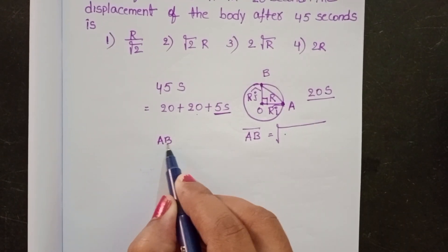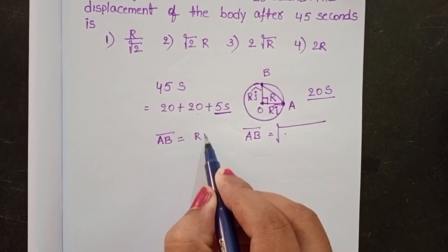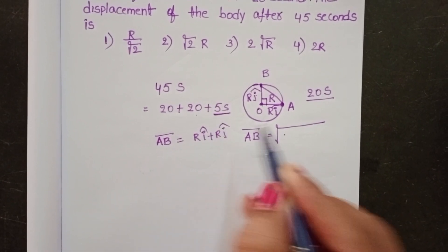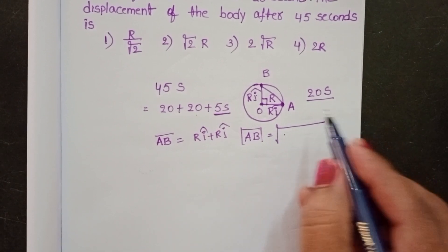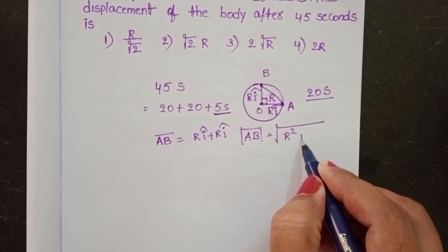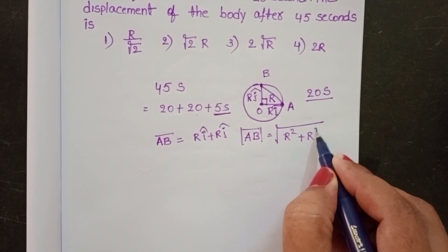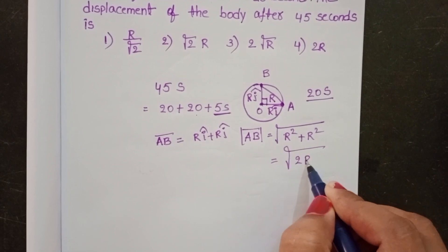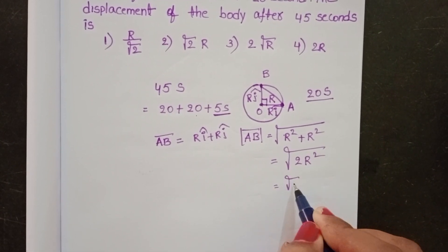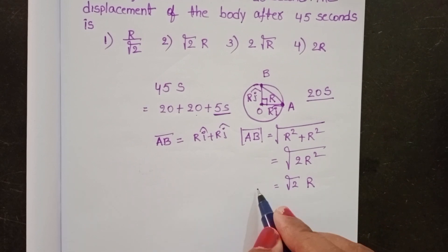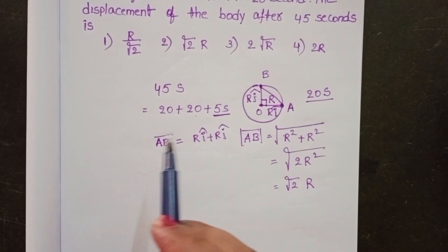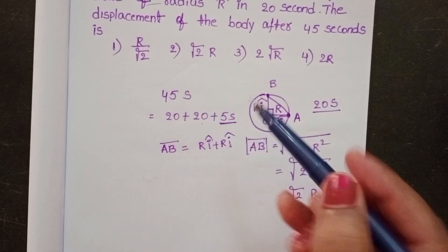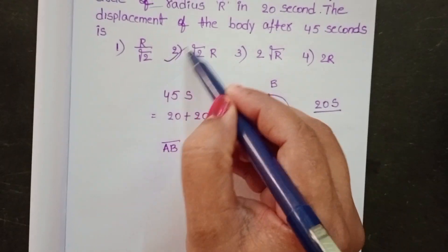AB vector equals R î cap plus R ĵ cap. The magnitude is equal to the square root of R squared plus R squared, which gives root 2 into R. This is the displacement of the body after 45 seconds. The second option is correct.